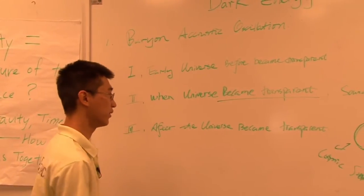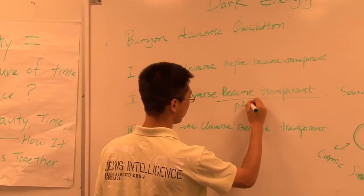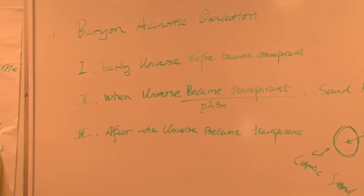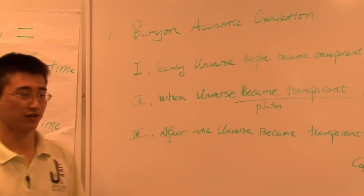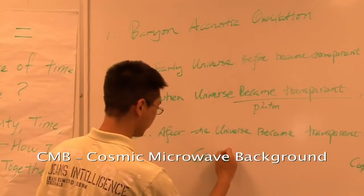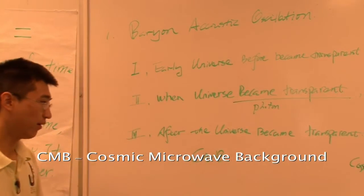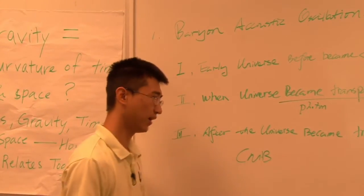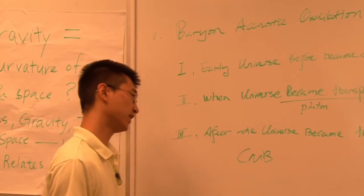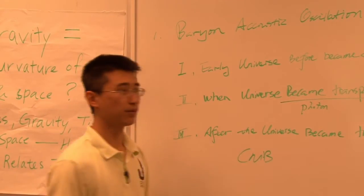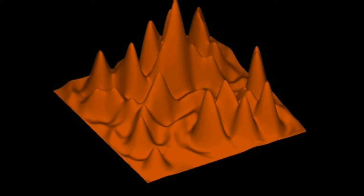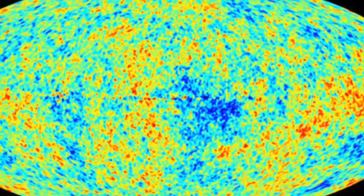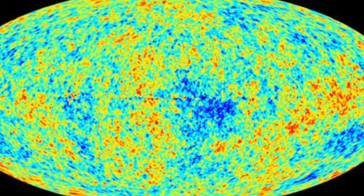When we say the universe becomes transparent, we mean that now the photons can travel past the neutral hydrogens, can travel past the baryons. The reason why we see fluctuations in our CMB map is because, as I said, the baryons are moving in the form of sound waves. So there will be some places that are compressed and some places that are rarefied. The places that are compressed will have more mass and light, so in our CMB map they have a higher temperature. That's another reason why we see fluctuations in our CMB maps.